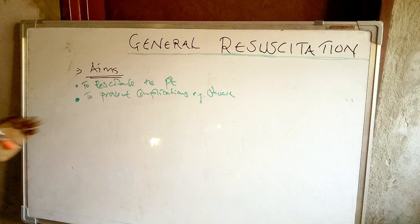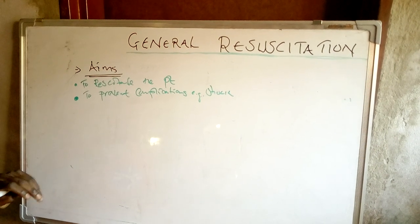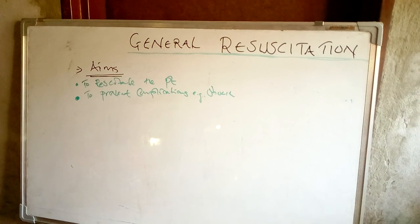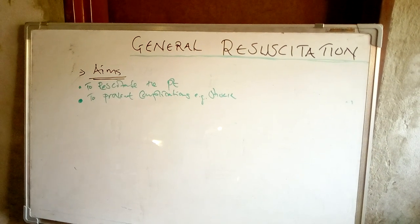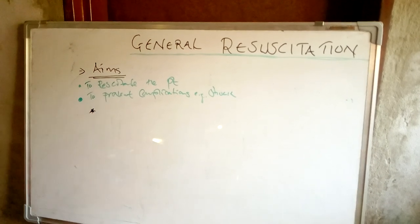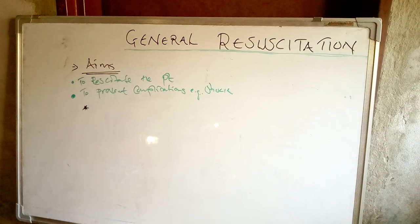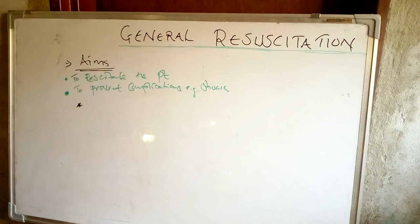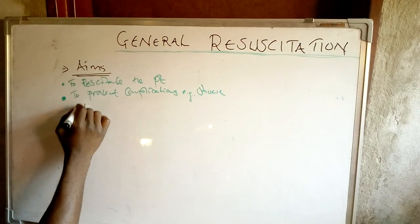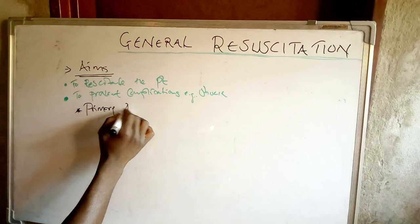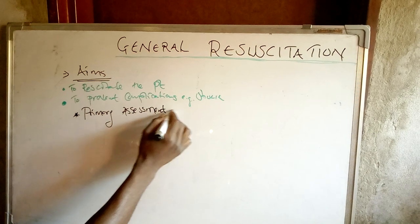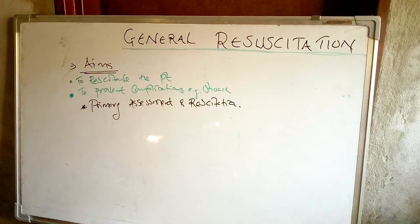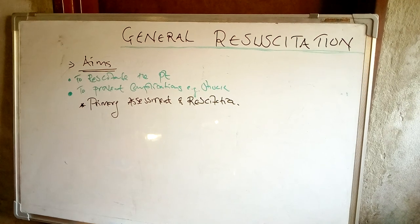After writing our aims, the next thing we talk about is the primary assessment and resuscitation. We need to assess the general condition of the patient - we need to assess if the patient's airway is patent and if the circulation is okay. So after the aims, we're talking about primary assessment and resuscitation.